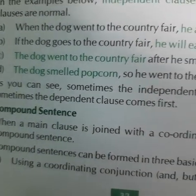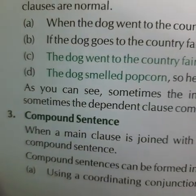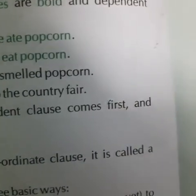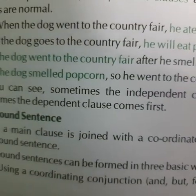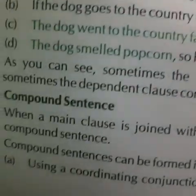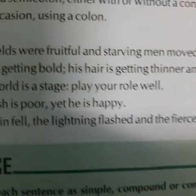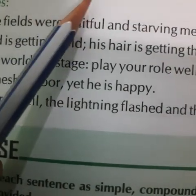Next is compound sentences. When the main clause is joined with a coordinate clause, it is called a compound sentence. Compound sentences can be formed in three basic ways: first, using a coordinating conjunction — and, but, nor, for, or, so, yet; second, using a semicolon either with or without a conjunctive adverb; and third, using a colon.